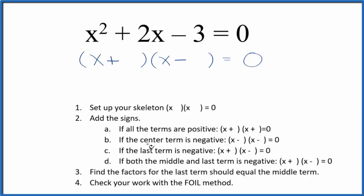So now that we have the signs, we can find the factors for that last term, that negative 3, that are going to equal the middle term when we add them together. So the factors for 3, negative 3, we could say 1 times 3. That could be 1 times negative 3 or negative 1 times 3.